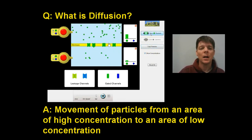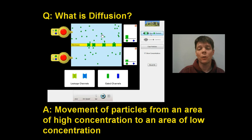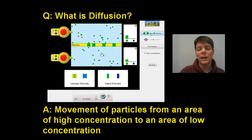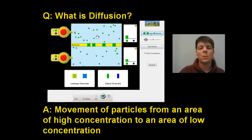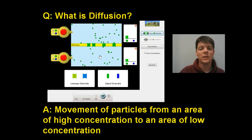I've added a number of channel proteins. These are membrane proteins that are like doorways. And once we open those, we can see that the green particles were free to move from the area where they were highly concentrated above the membrane to where they are less concentrated below the membrane. So the particles moved from an area of high concentration outside of the cell to an area of low concentration inside of the cell.